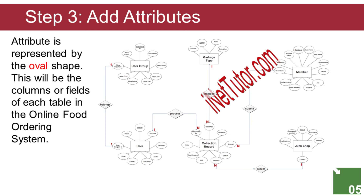The User entity has the following attributes: user_ID (primary key, represented with underline), username, password, avatar, full name, contact, email, user_category_ID (foreign key), status. The User Group entity has the following attributes: